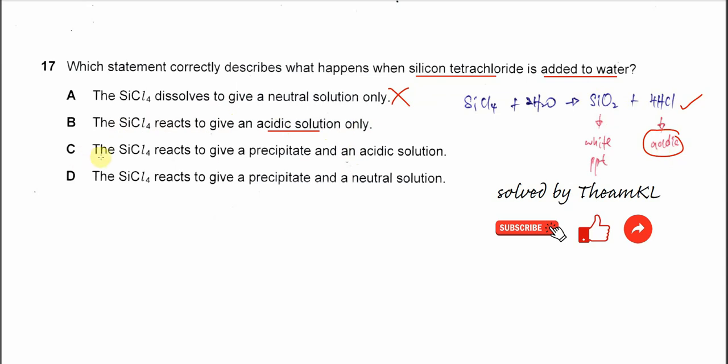Option C: The SiCl4 reacts to give a precipitate - yes, this is a white precipitate - and acidic solution. Yes, this one is a complete answer or observation.